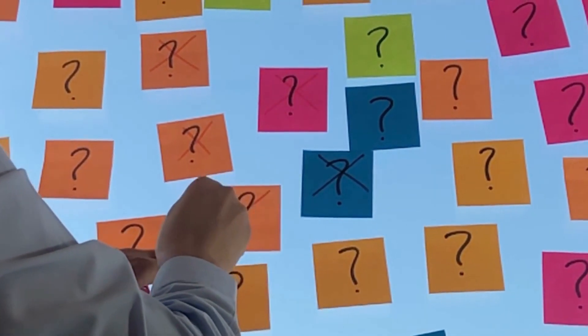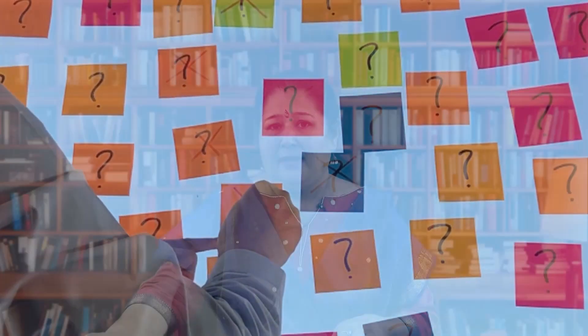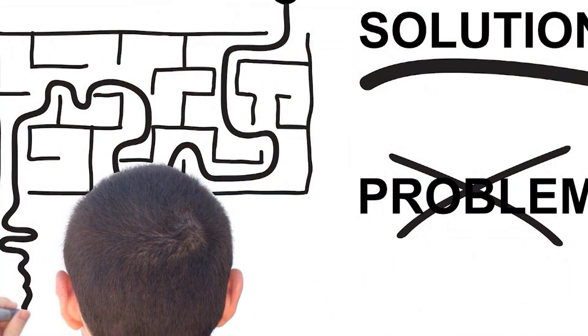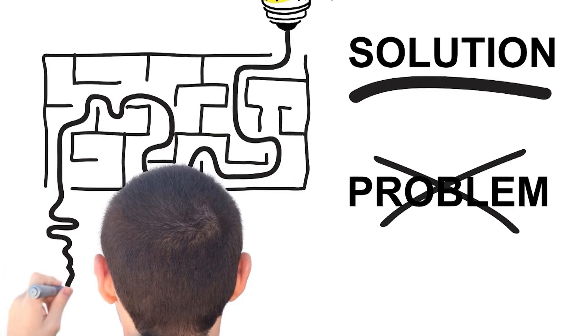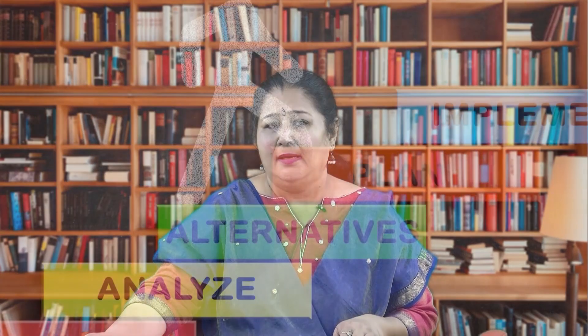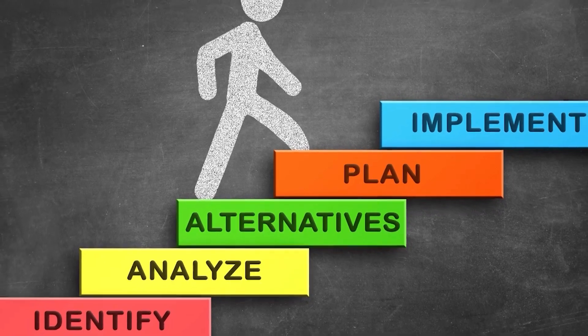There are problems — you must have done problems in different disciplines, in sciences, in mathematics. So problems are given, problems are faced, and we try to find a solution. Let us now discuss what are the different steps and what process we follow to solve a problem and find a solution.